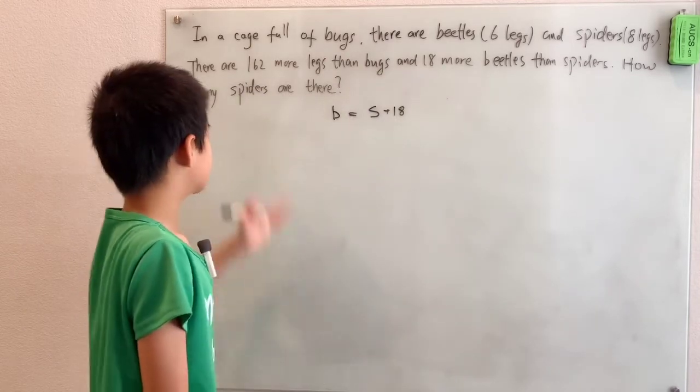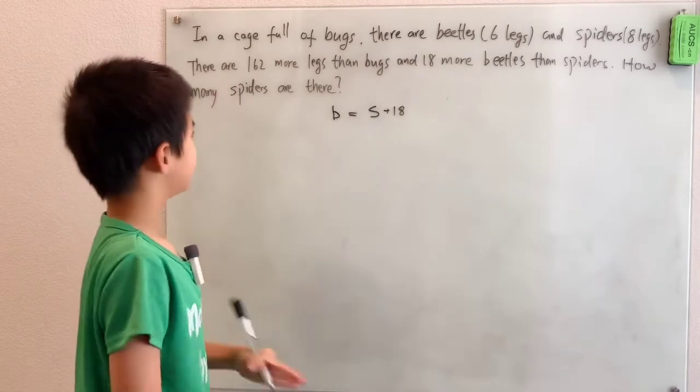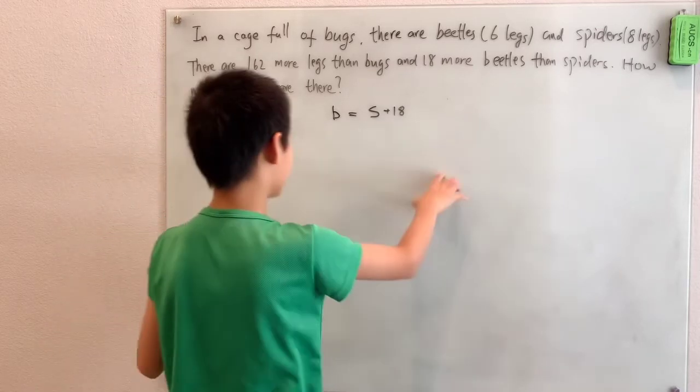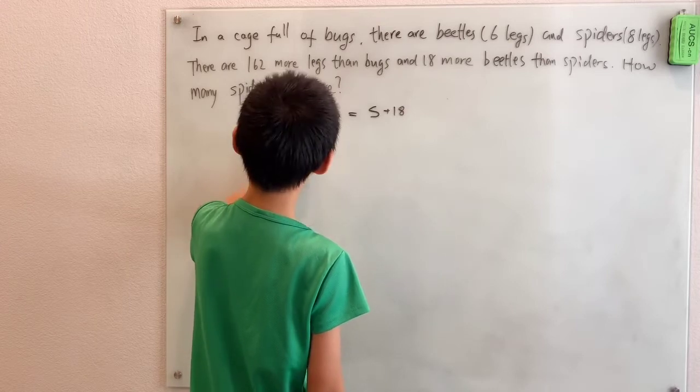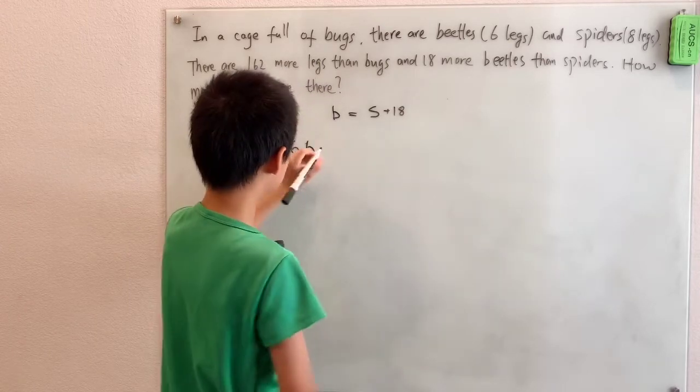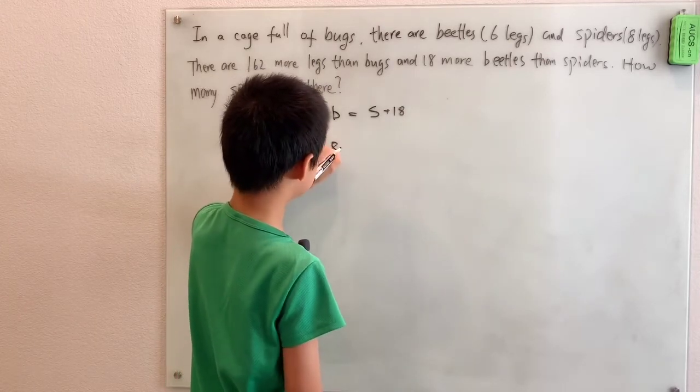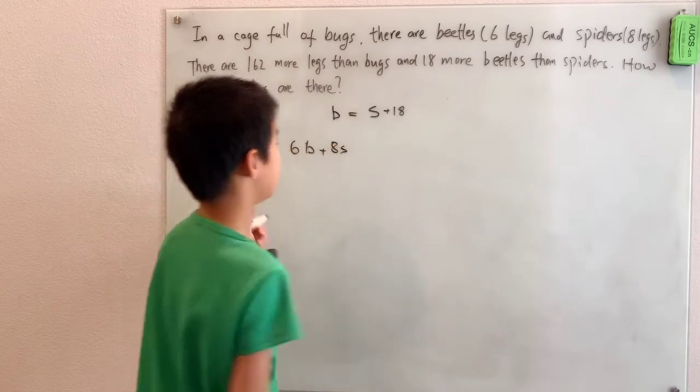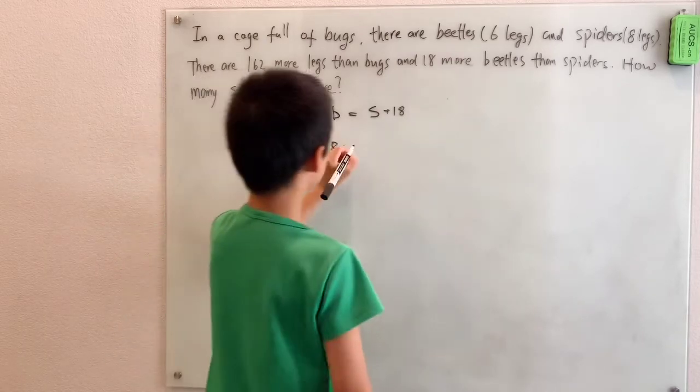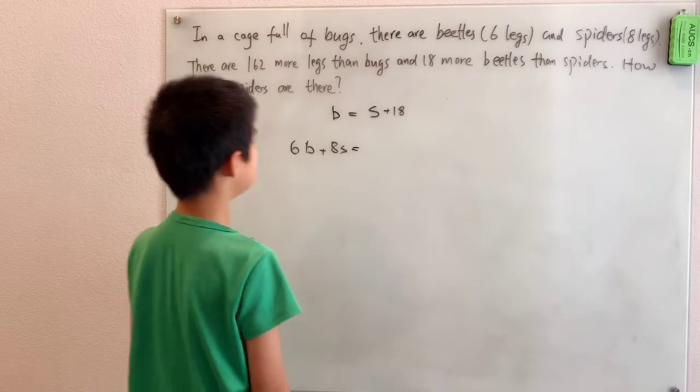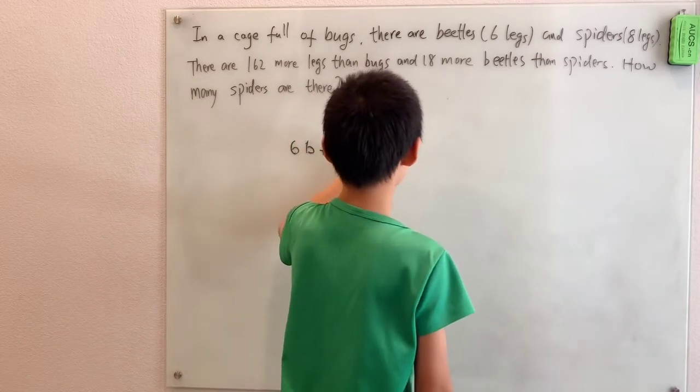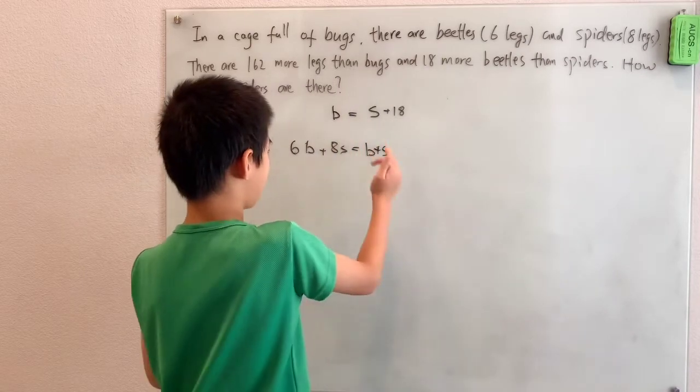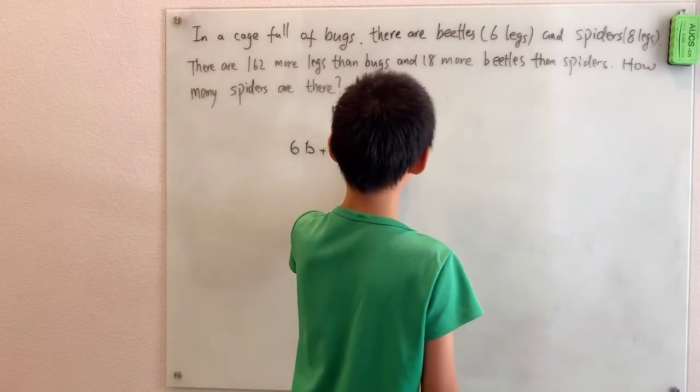And then we're also given that there are 162 more legs than bugs. So the number of legs there are, which is 6B, six legs for each beetle, plus eight legs for each spider. So 6B plus 8S, which is the amount of legs there are, is 162 more than the bugs, which is B plus S.